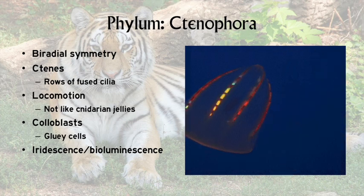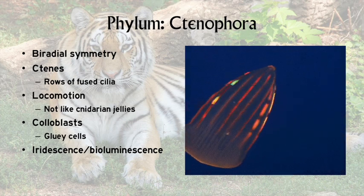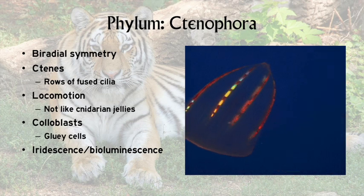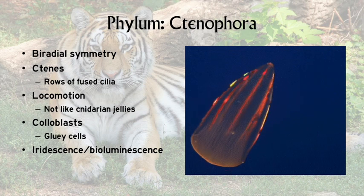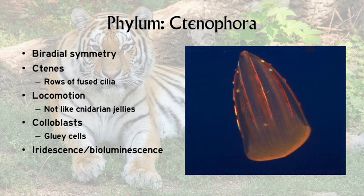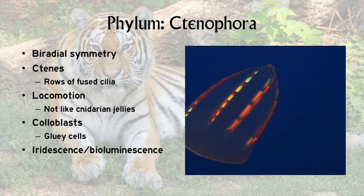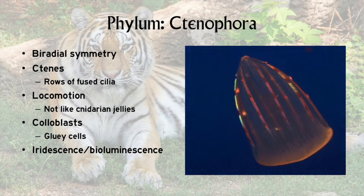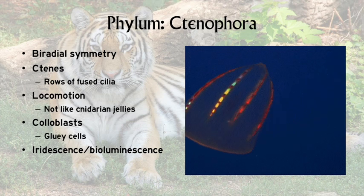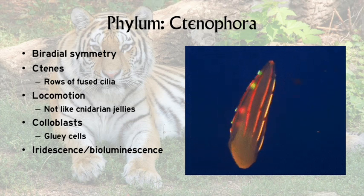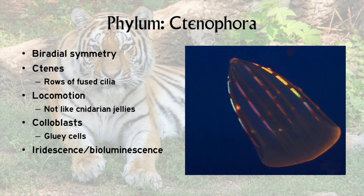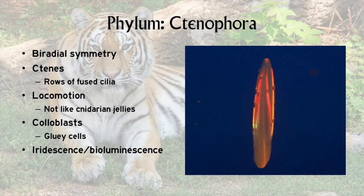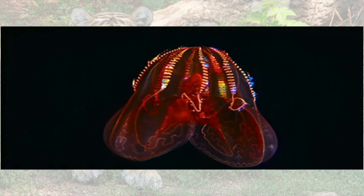Another distinguishing feature of ctenophores is the manner in which they catch their meals. Cnidarians have stinging cells, which they use to subdue their prey, but ctenophores use glue instead of venom, via cells called coloblasts. A final feature seen in some comb jellies is the presence of beautifully colorful and glowing structures within those ctenes that make them light up the seas — another feature you can also see in the image on the right, and also in this image.